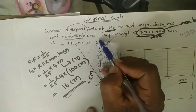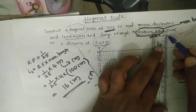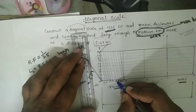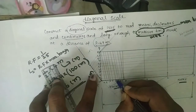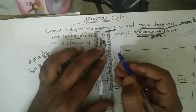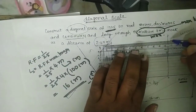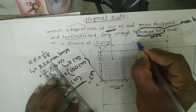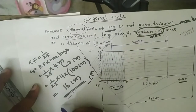After completion, mark a distance of 2.47 meters. Here, 2 is the meters, 4 is the decimeters, and 7 is the centimeters. Take the 4 and 7 point like this. This is the 2.47 meters distance — 2.47 meters.